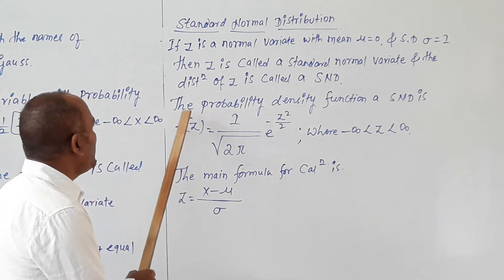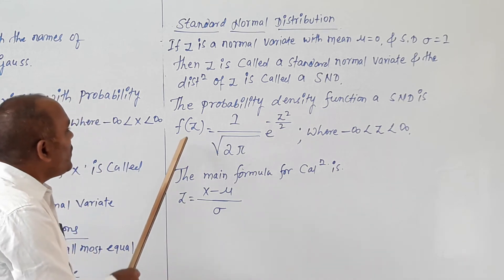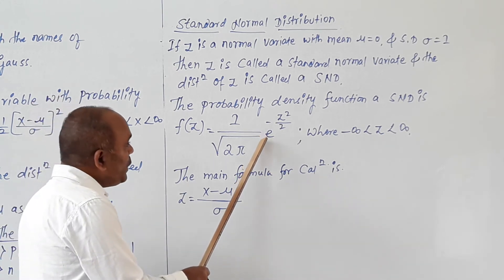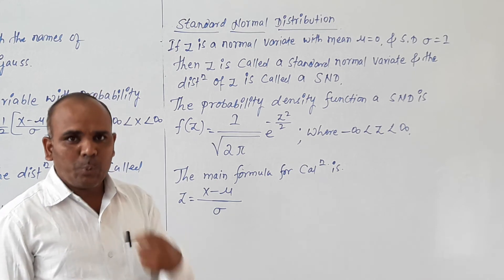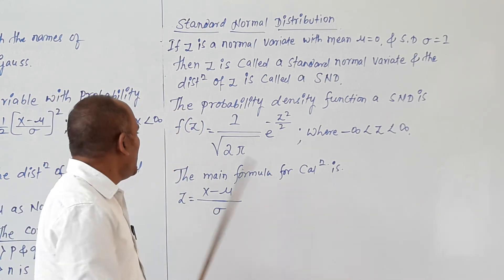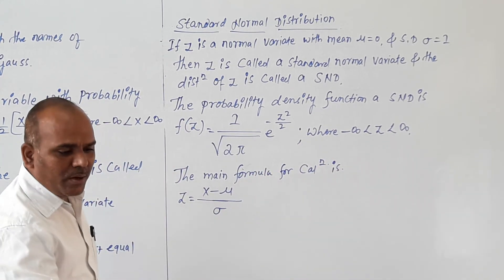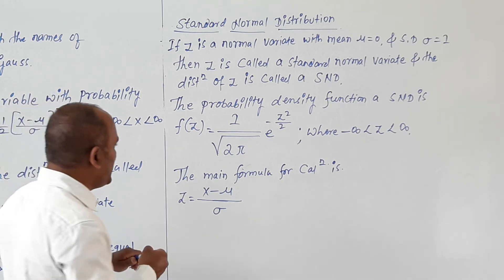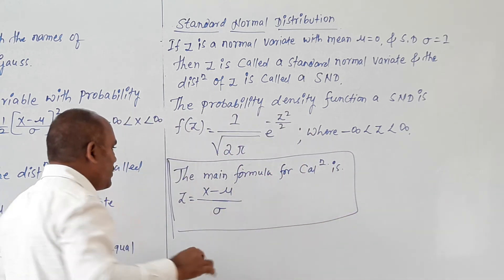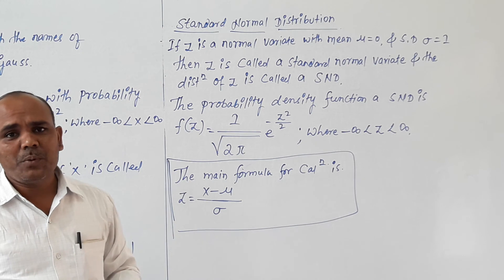The probability density function of the Standard Normal distribution is: f of z equals 1 divided by the square root of 2π, into e raised to minus z squared divided by 2, where z lies between minus infinity and plus infinity. The main formula for calculation of problems is z equals x minus mu divided by sigma.